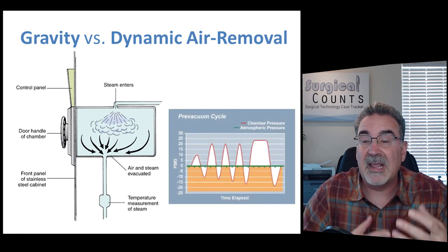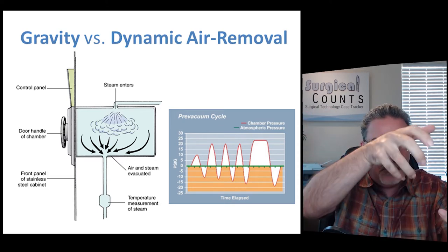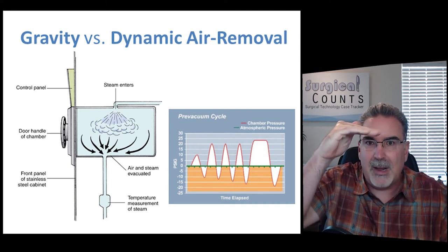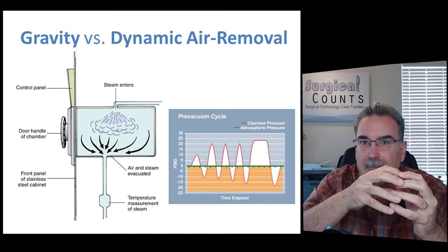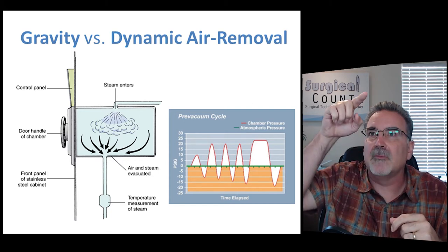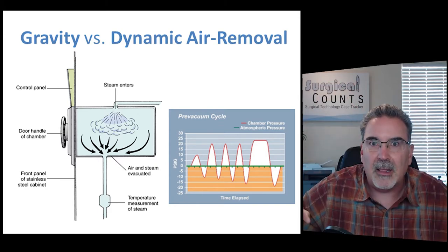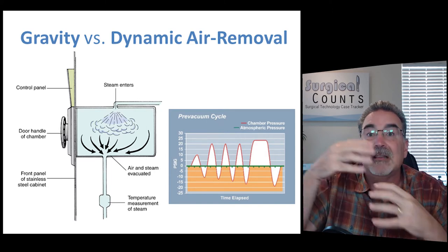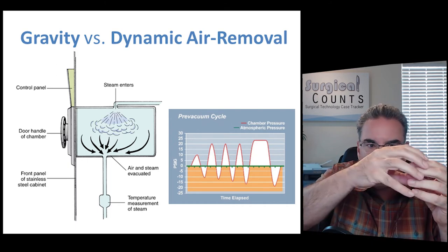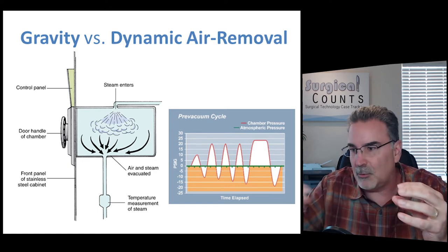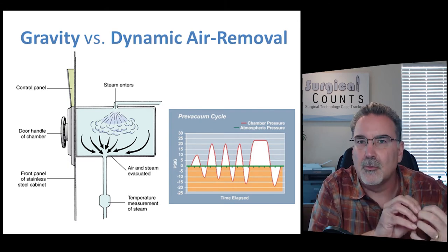To speed up the process, they've developed a dynamic air removal system. As the steam comes in, there's actually a vacuum pulling the air out — the pressure in the chamber lowers way down, creating almost a vacuum. All the air is pulled out, then the steam comes rushing in and fills all those little gaps. The system cycles from very low pressure into very high pressure, pushing the steam in, then sucking it all out, then pushing it back in again. For instruments with lumens, such as suction tips, this process pulls the air out and pushes the steam back in repeatedly, really speeding up the sterilization process especially in those hard-to-reach areas.